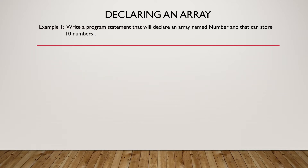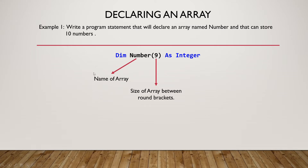Firstly, how to declare an array. In this example, we are going to write a program statement that will declare an array named 'number' that can store 10 numbers. The statement is: Dim number(9) As Integer. The name of the array is 'number', 9 is the size of the array in round brackets, and Integer is the data type.